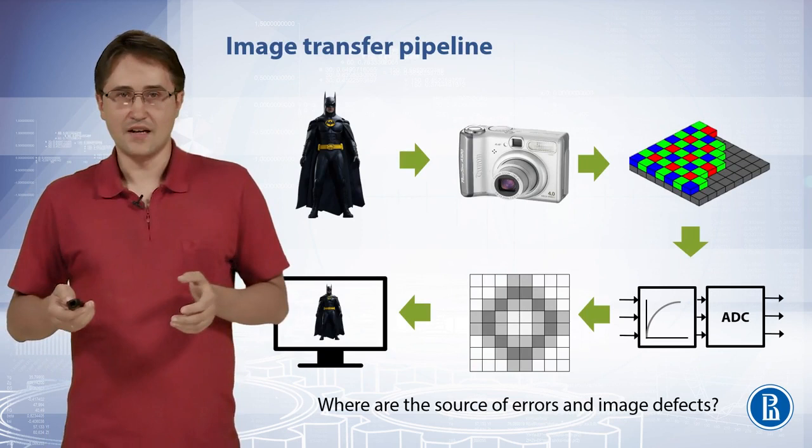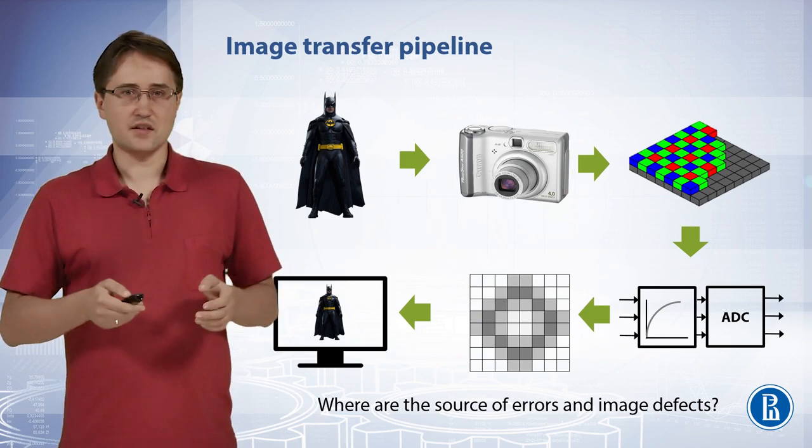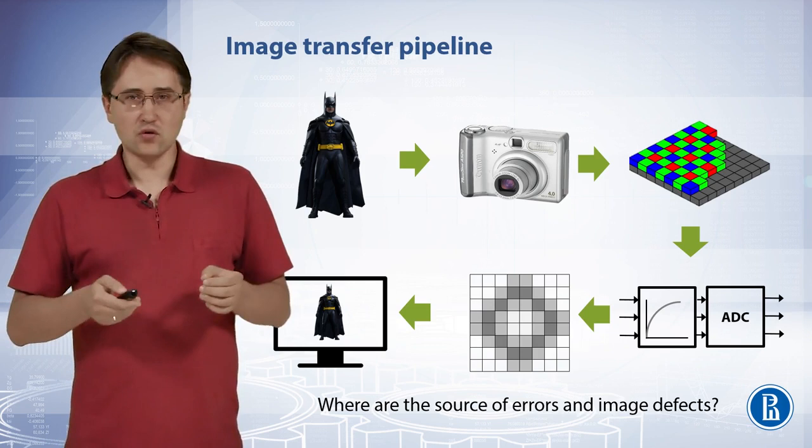Where are the sources of errors and image defects? Let's look at the image transfer pipeline from real-world objects to its representation on the computer display. First, an optical image is formed in the camera. Then it is passed through the Bayer pattern to the sensor array, where it is discretized. Then it is transferred via computer network and displayed on a display.